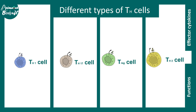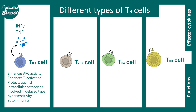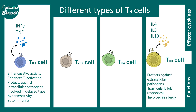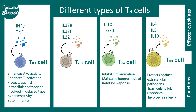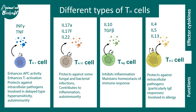Different T helper cell subtypes produce distinct cytokines. TH1 secretes TNF-alpha and interferon gamma, enhancing APC activity and protecting against intracellular pathogens, but can cause hypersensitivity or autoimmune responses. TH2 produces IL-4, IL-5, and IL-13, helping fight extracellular pathogens like helminths. T regulatory cells secrete IL-10, which is anti-inflammatory. TH17 secretes IL-17 and IL-22, which are pro-inflammatory.